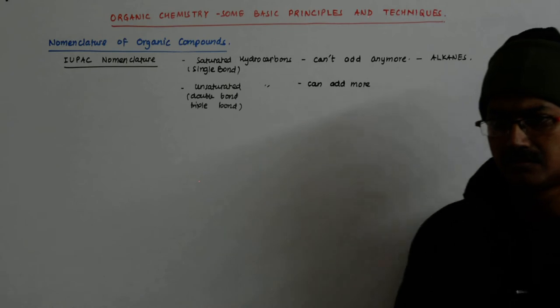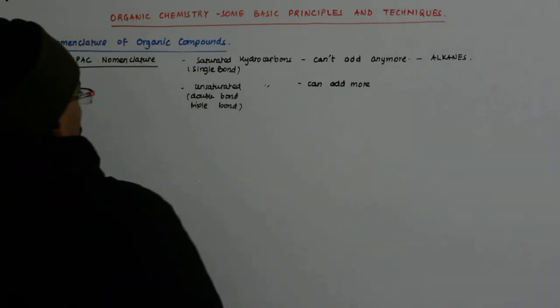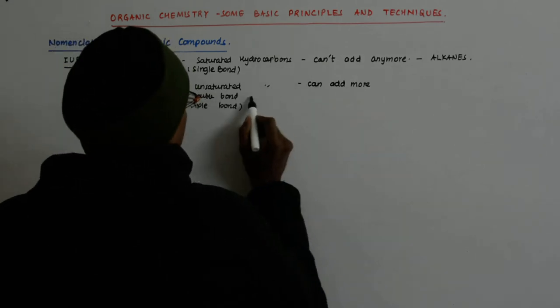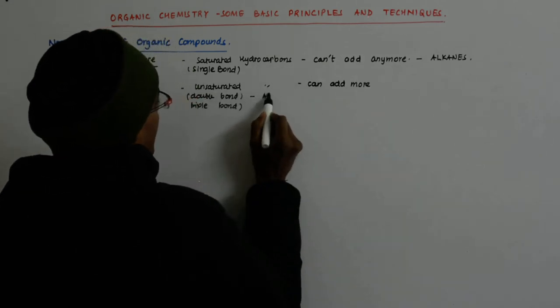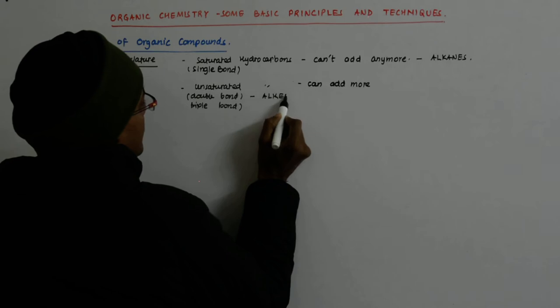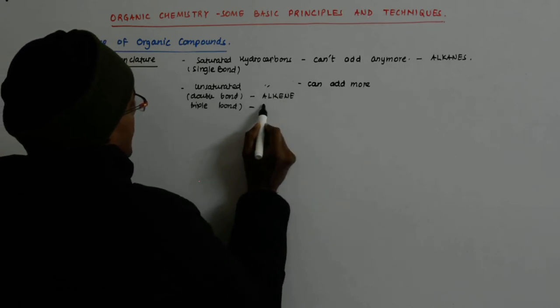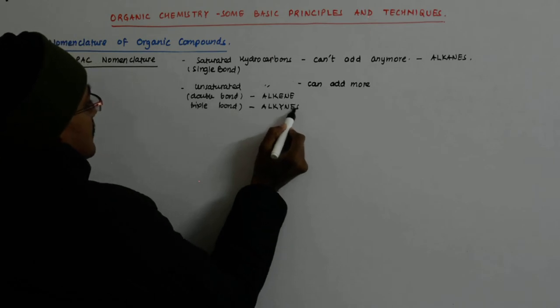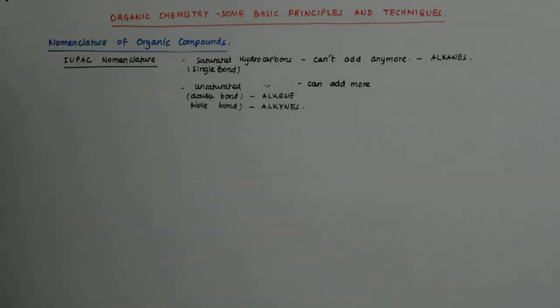Unsaturated, double bonded are called alkenes and the triply bonded are called alkynes. This we have studied in class 10th.